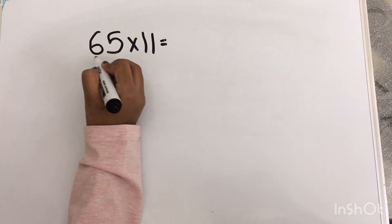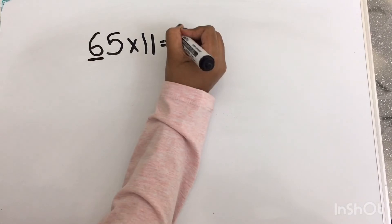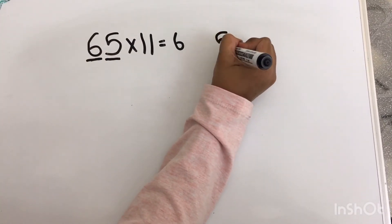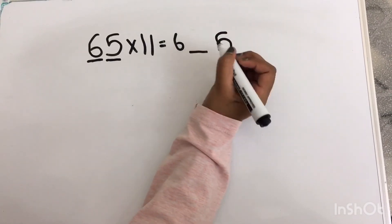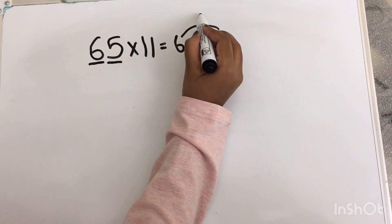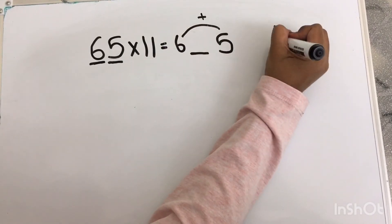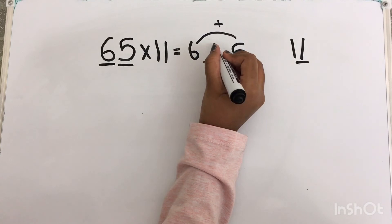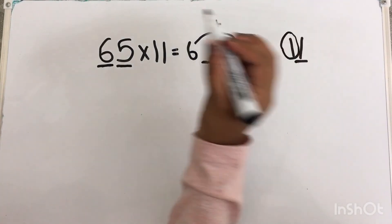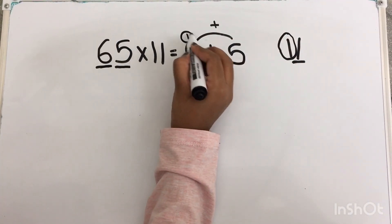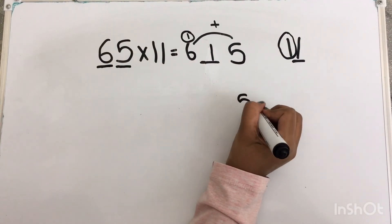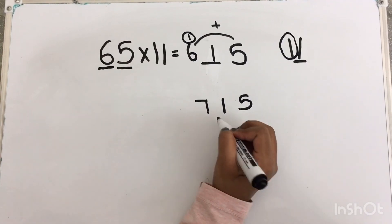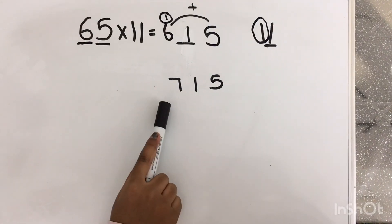Now I am going to write the tens digit 6 here and the units digit 5 here. For the middle number, 6 plus 5 equals 11. I take the units digit 1 and write it in the middle, and the tens digit 1 I put as a carry over. So 1 plus 6 equals 7. The answer is 715.